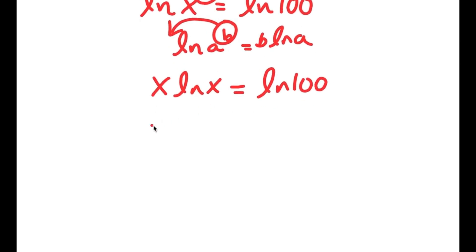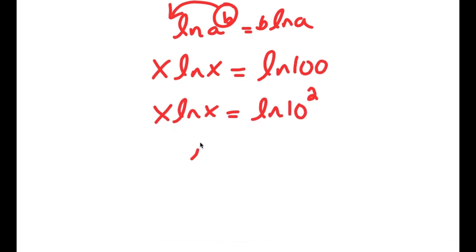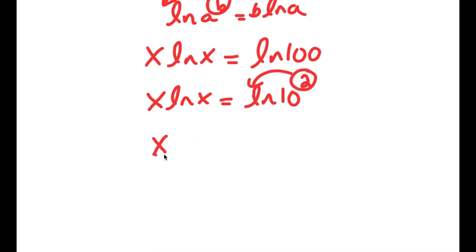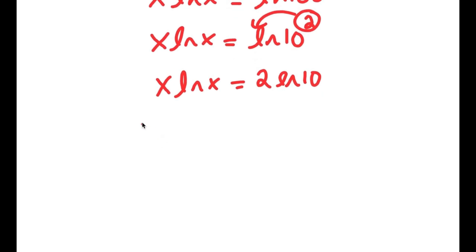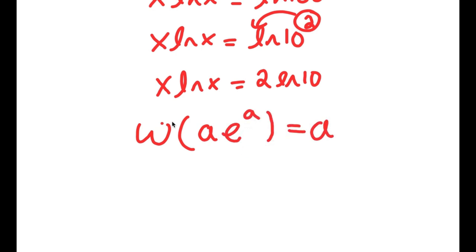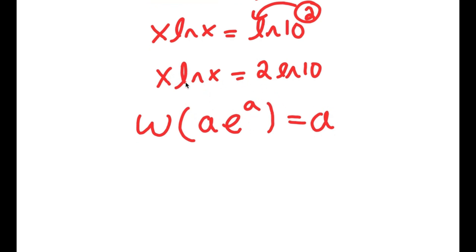Now ln 100 is the same thing as ln of 10 squared. Using the log power rule again, I can move 2 to the front, so I get x times ln x is equal to 2 times ln 10. Now there's something called the Lambert W function. If I take the Lambert W function of something in the form a times e to the power of a, this equals a. So what I'm going to do is rewrite x as e to the power of ln x, because e and ln cancel out and this results in simply x.